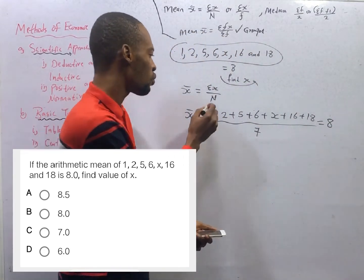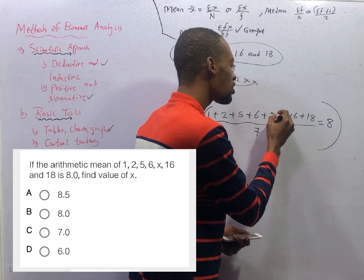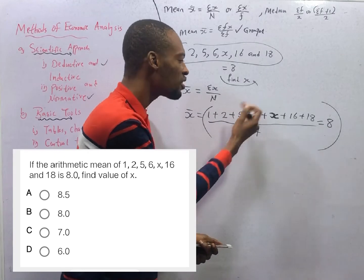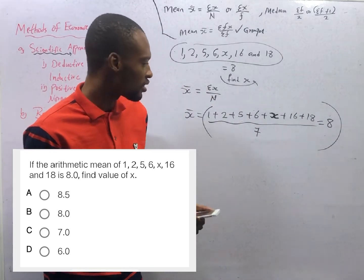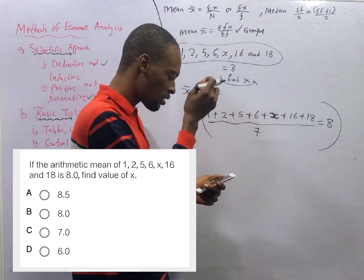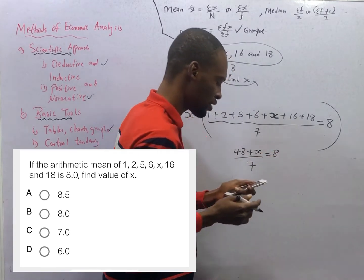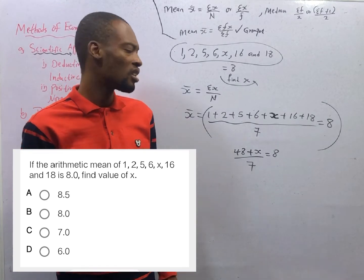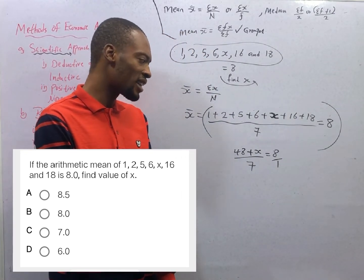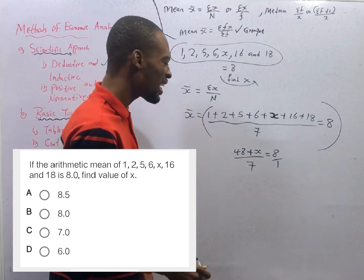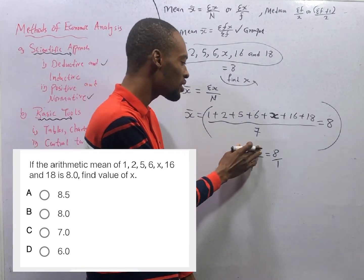So we have everything here but there is a challenge — this is S, so what is the value of S? To get S, we add all the numbers and then make S the subject of the formula. Now, 1 plus 2 plus 5 plus 6 plus 16 plus 18 should amount to 48. So 48 plus S over 7 equals 8. We know that 8 is the same thing as 8 over 1, so we cross-multiply. Don't ever say something here cancels something else when there is a plus sign separating two numbers — you cannot cancel anything. And you cannot say 48 plus S is 48S — that is only done when you have multiplication.